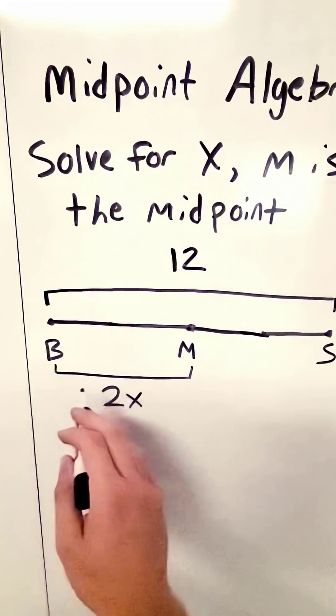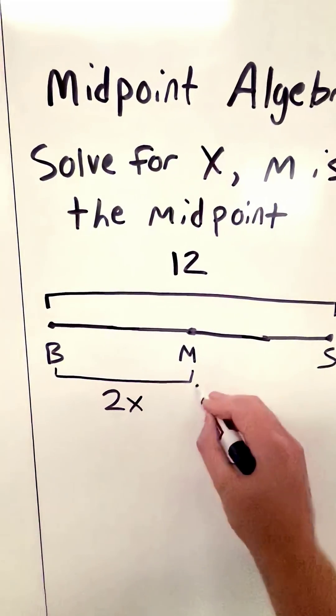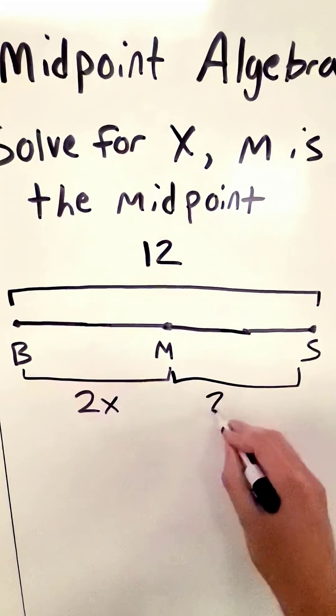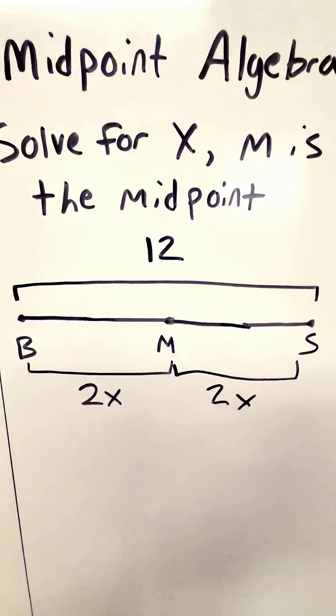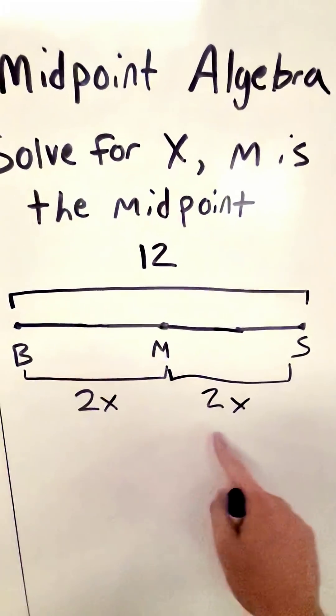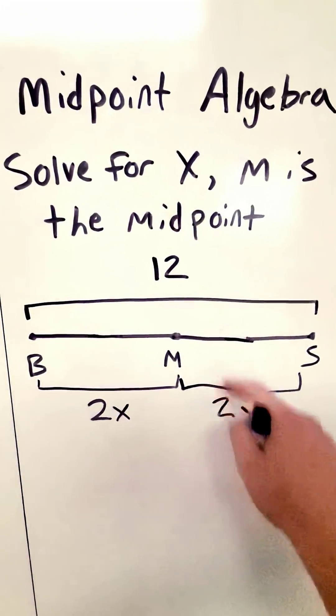So if this entire thing BM is 2x, then MS is going to be 2x as well. Then we know both parts, 2x and 2x, and we know the whole, 12.